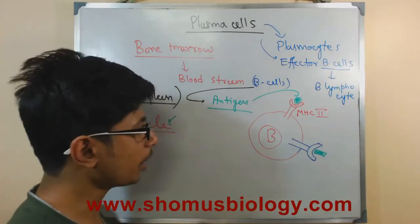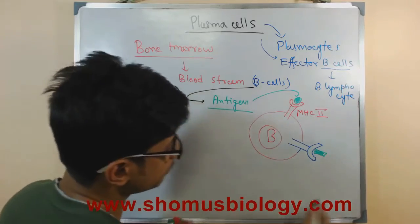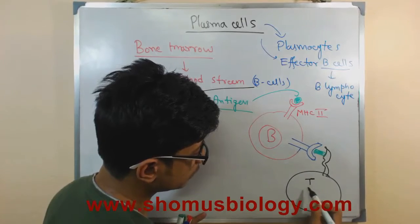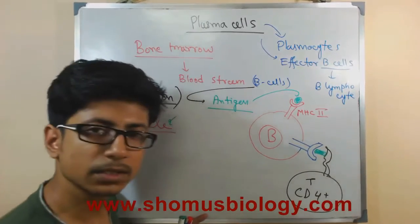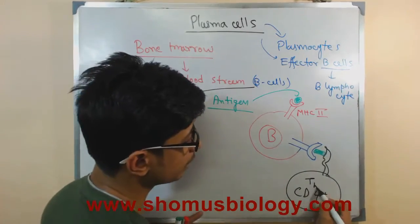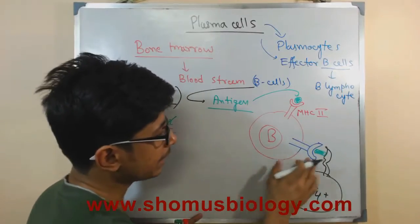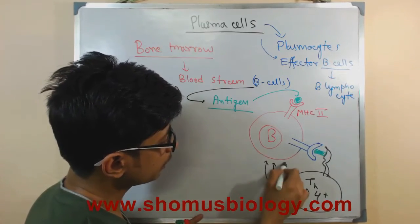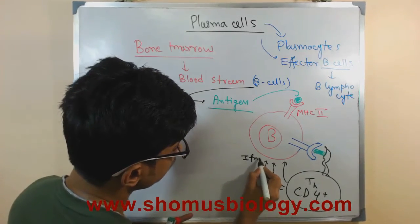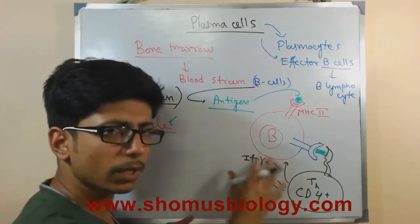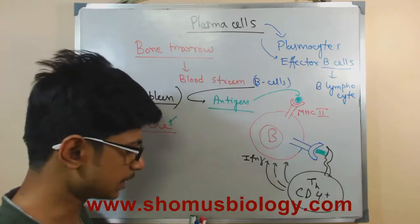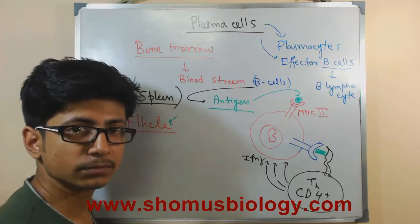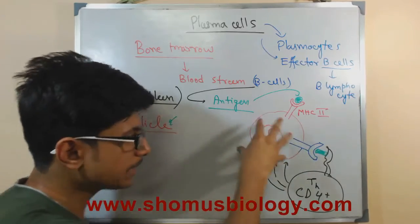Once the B cell is sitting there doing its job presenting antigen, T cells come in. The T cell we are talking about here has different receptor molecules on its surface and is called CD4 T cell — also called the T helper cell. This T helper cell detects the antigen presented by the B cell and provides important chemical agents, one of which is interferon gamma. There are many different kinds of cytokines — chemical signaling molecules — that tell this B cell to grow and differentiate.